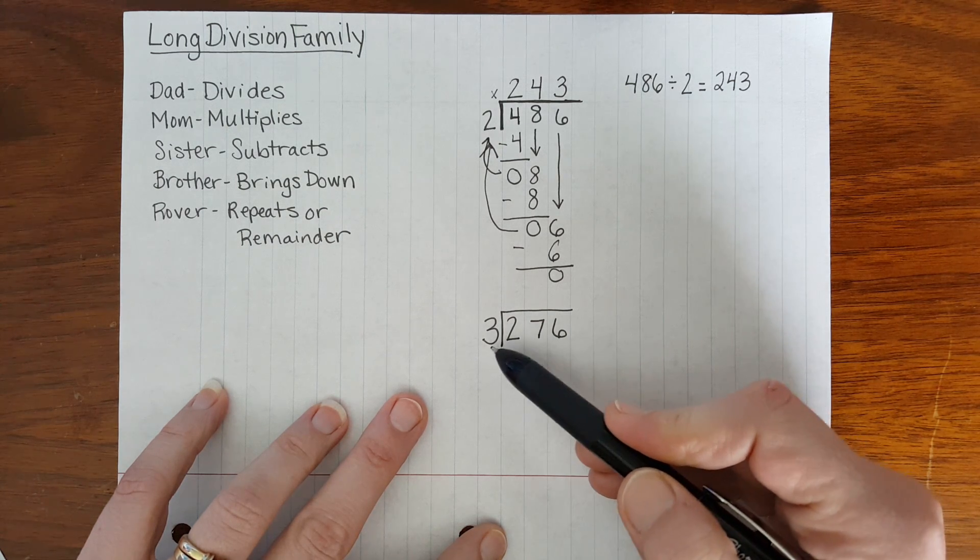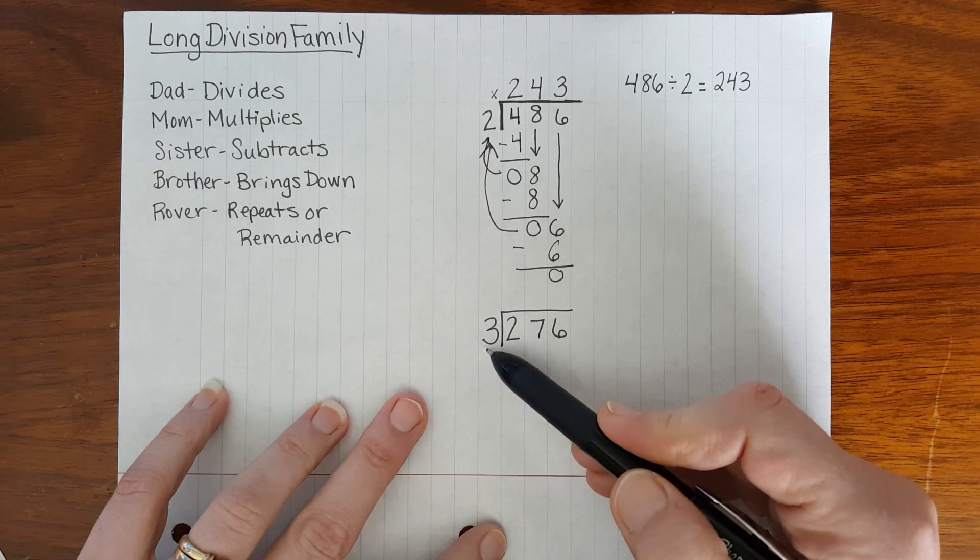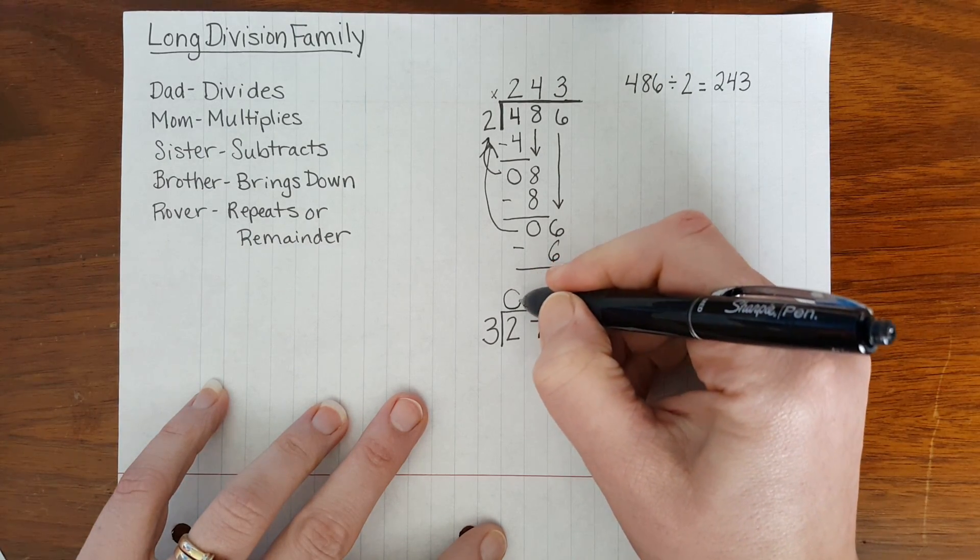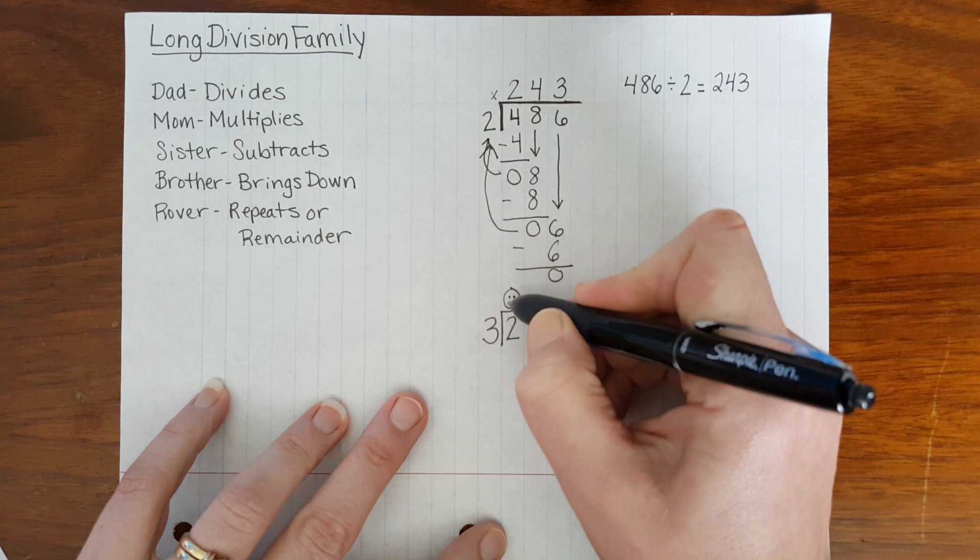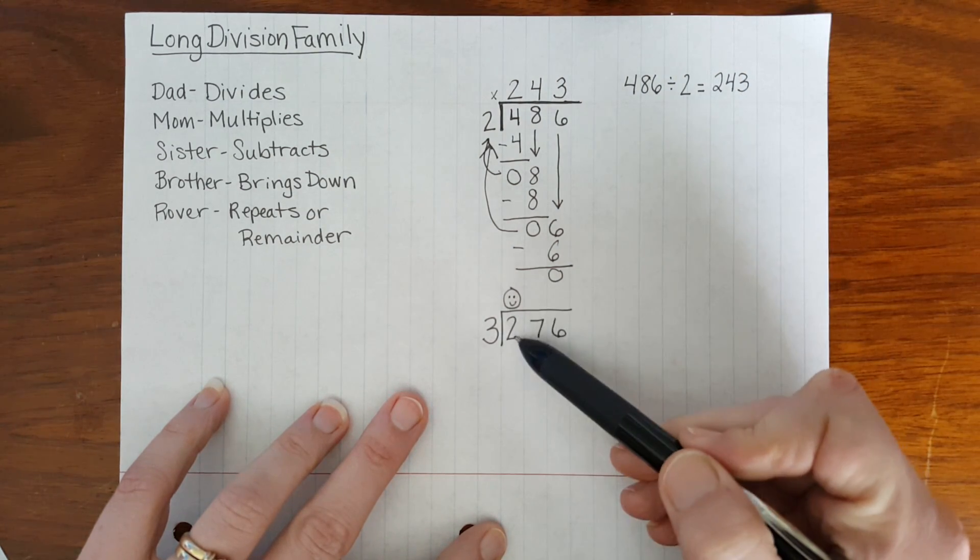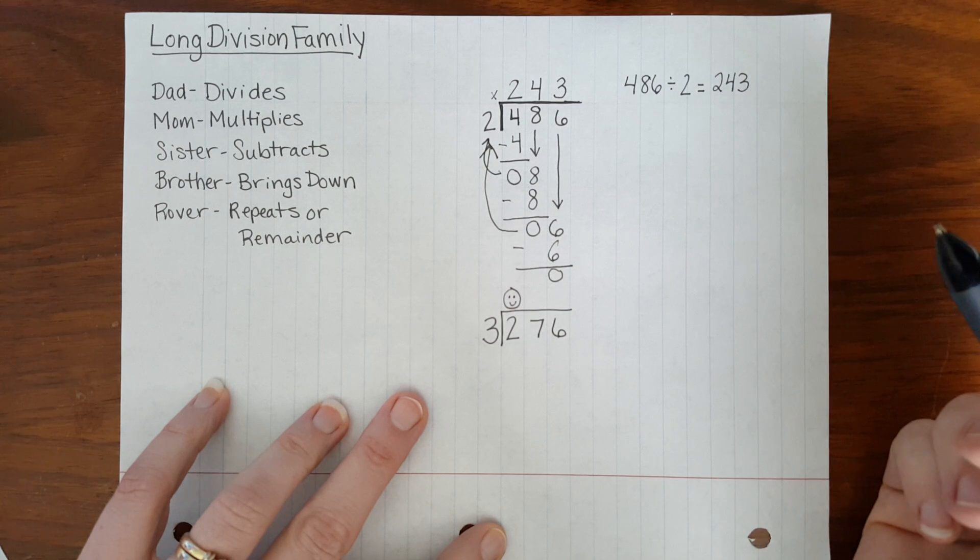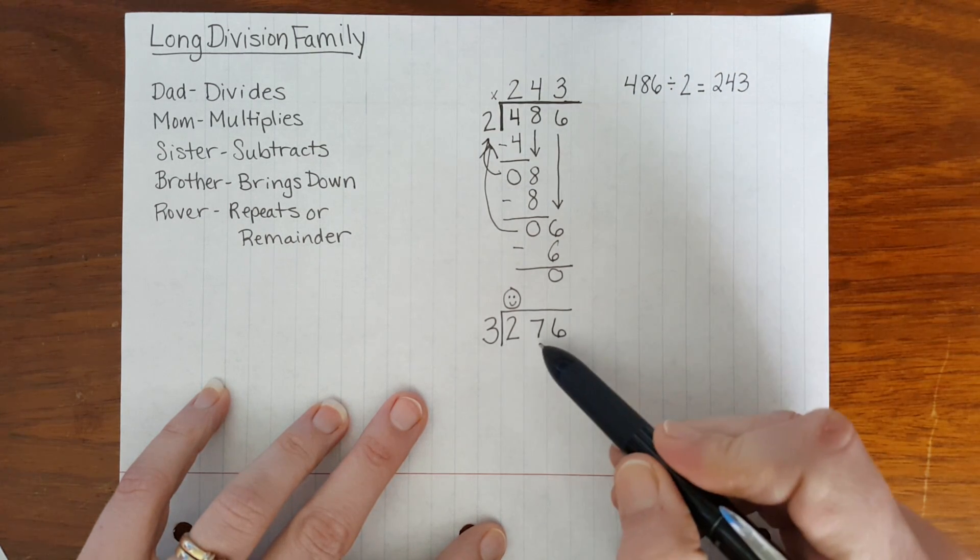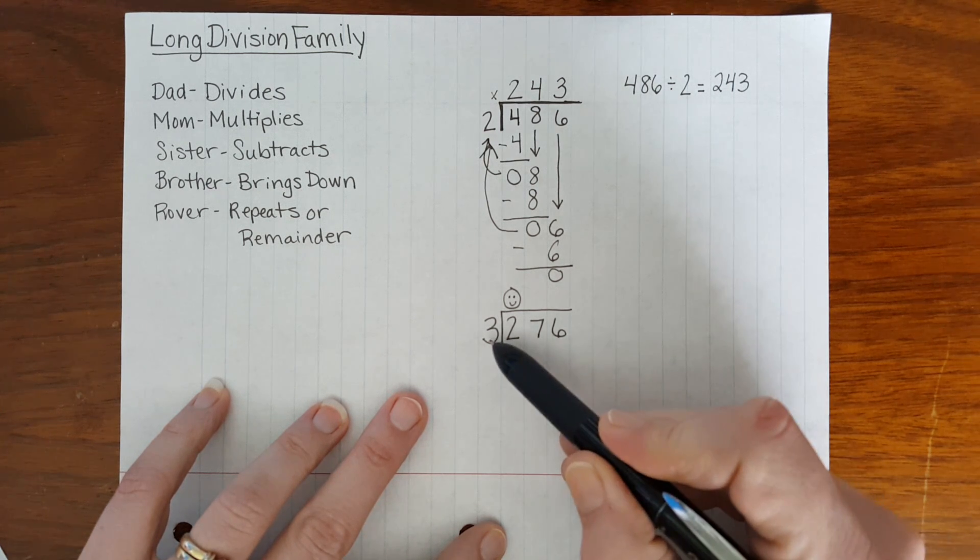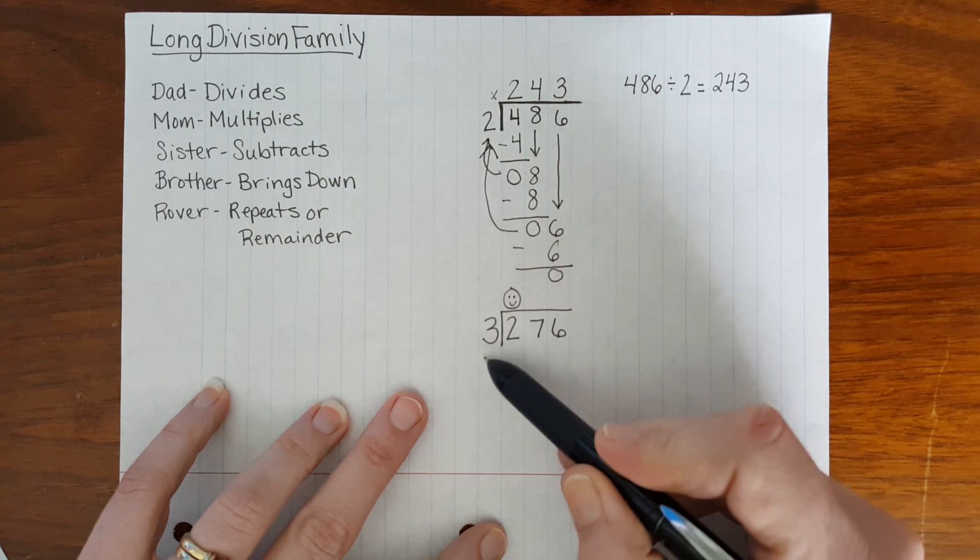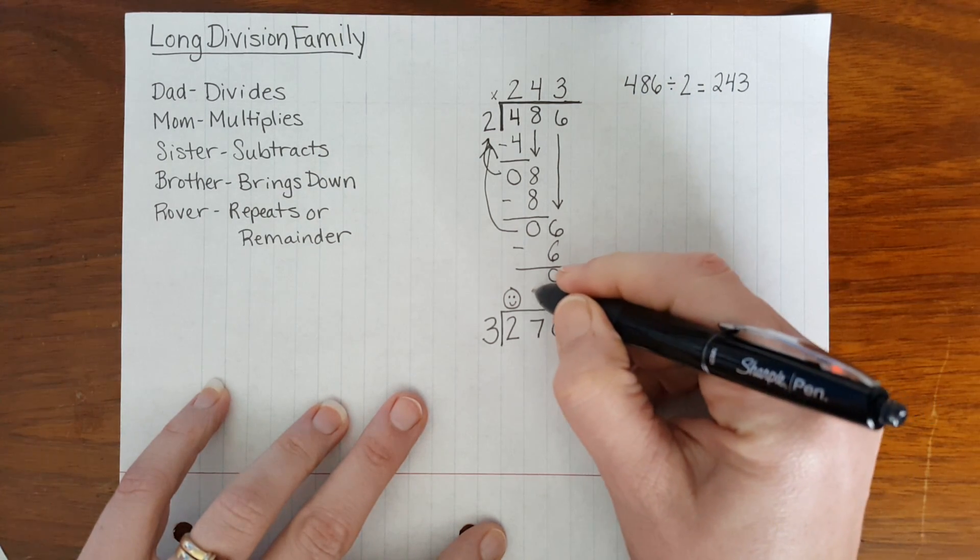2 cannot be split into 3 parts because 2 is smaller than 3. Dad says that will not work. So he puts a 0 above the 2. I turn it into a smiley face to hold the place value of that digit. Now Dad looks at 2 along with the next digit, which would make a 27. And says 27 divided by 3. Another basic math fact, 27 divided by 3 is equal to 9.